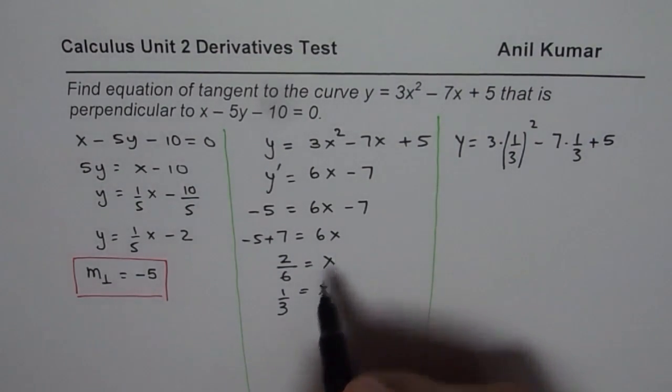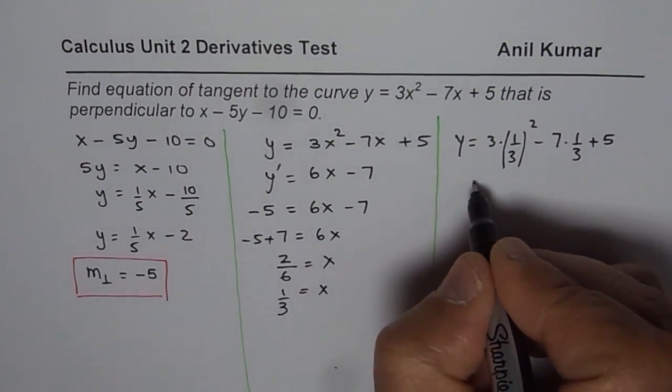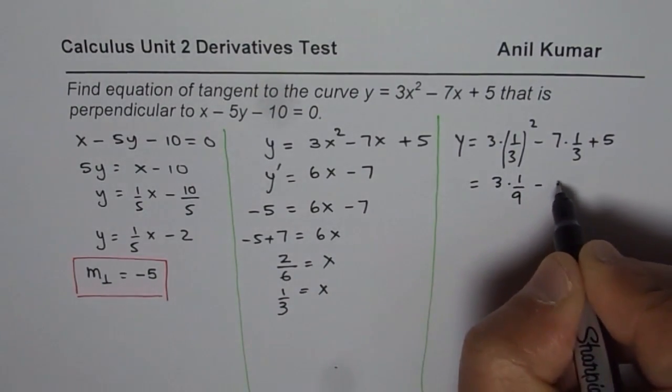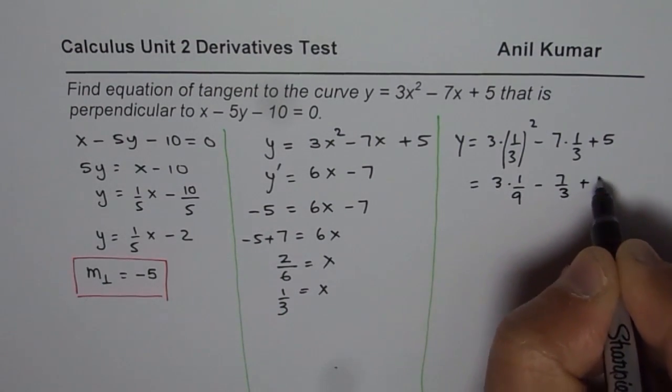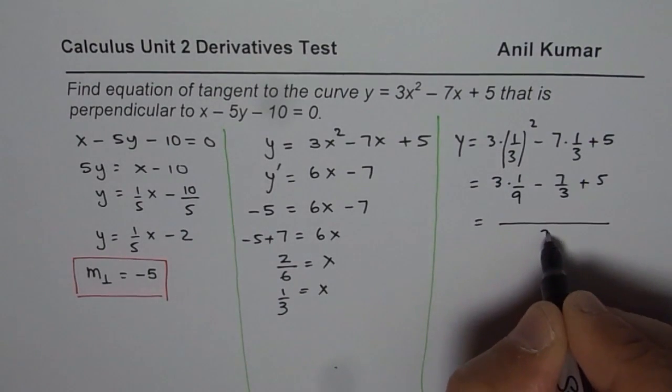3 times 1 over 3 squared minus 7 times 1 over 3 plus 5. So that gives us the value as 3 times 1 over 9 minus 7 over 3 plus 5. This is also 3, 1 over 3. So we will take 3 as common denominator.